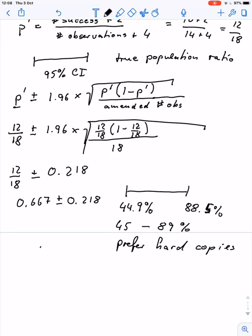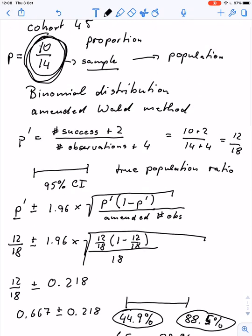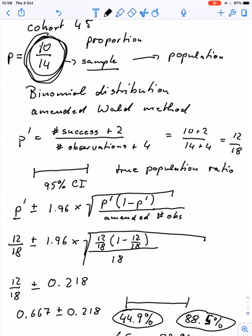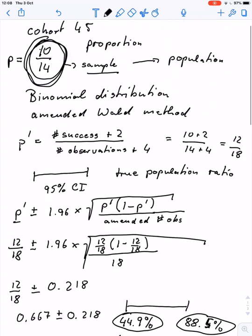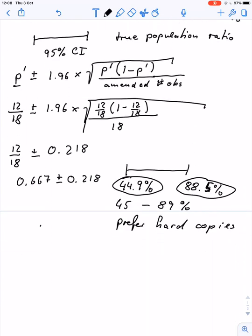Exactly how many indeed actually do want hard copies, we can't say. We can only say that from our sample we can make this conclusion that the ratio of people in the population, on average, are between 44.9% and 88.5%. So I hope this video makes sense and it gives you a little bit of an idea that even if we have something that looks pretty clear, like 10 over 14 in our sample, there is more to it when we look at the population. Thank you for watching and I hope it makes sense.